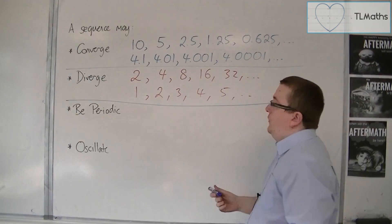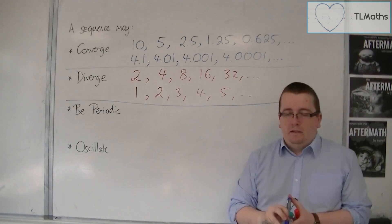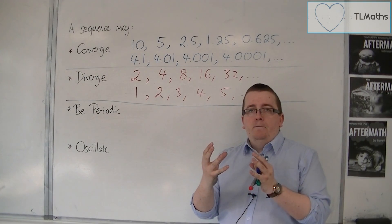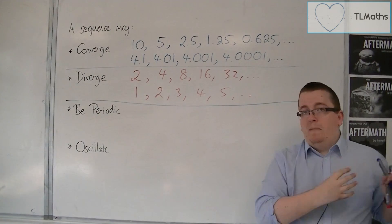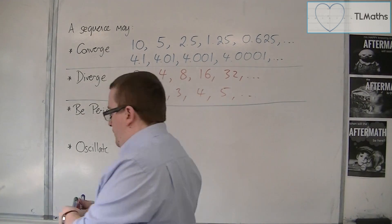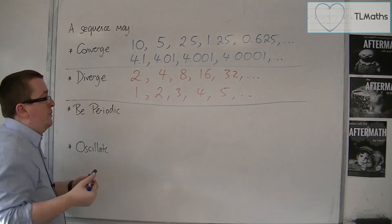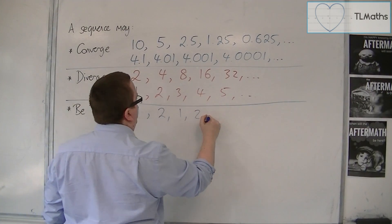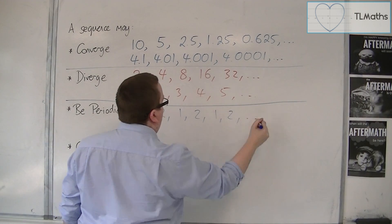If the sequence is periodic, then that means it repeats itself after a certain amount of terms. You could have a periodic sequence being something like 1, 2, 1, 2, 1, 2, etc.